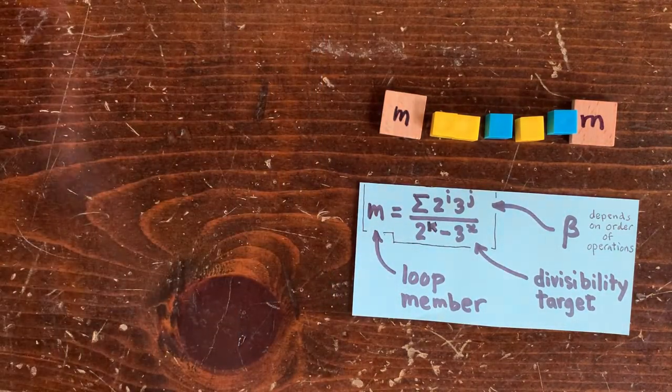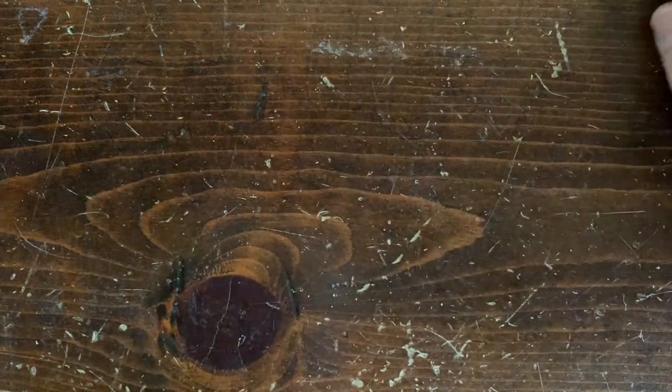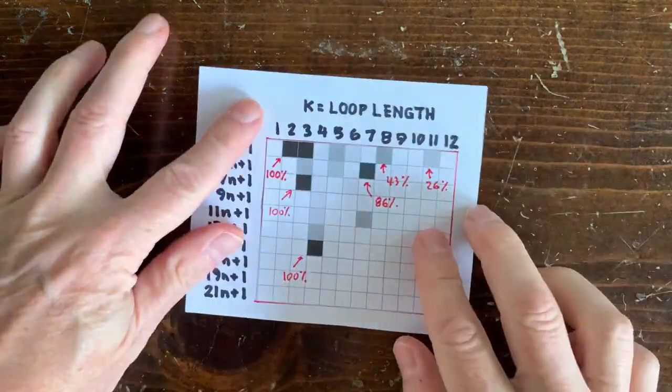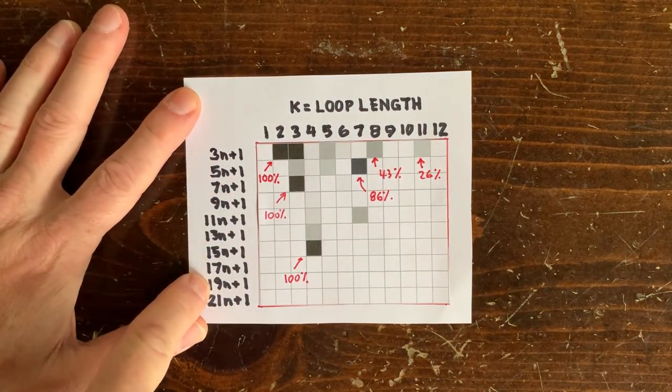So anyway, we want a small denominator plus lots of shuffling possibilities. So here's a chart that shows the different chances of different loops for the 3n plus 1 problem, 5n plus 1 problem, and so on.